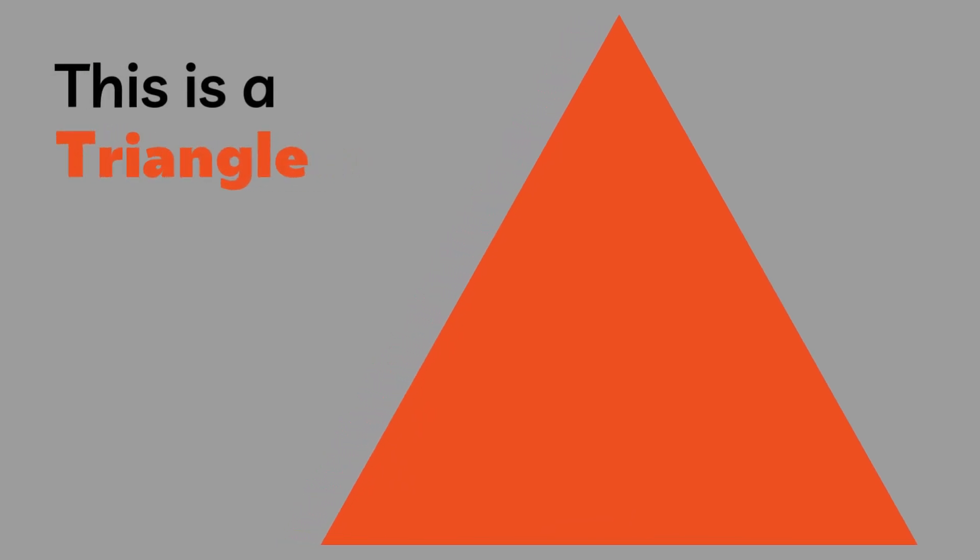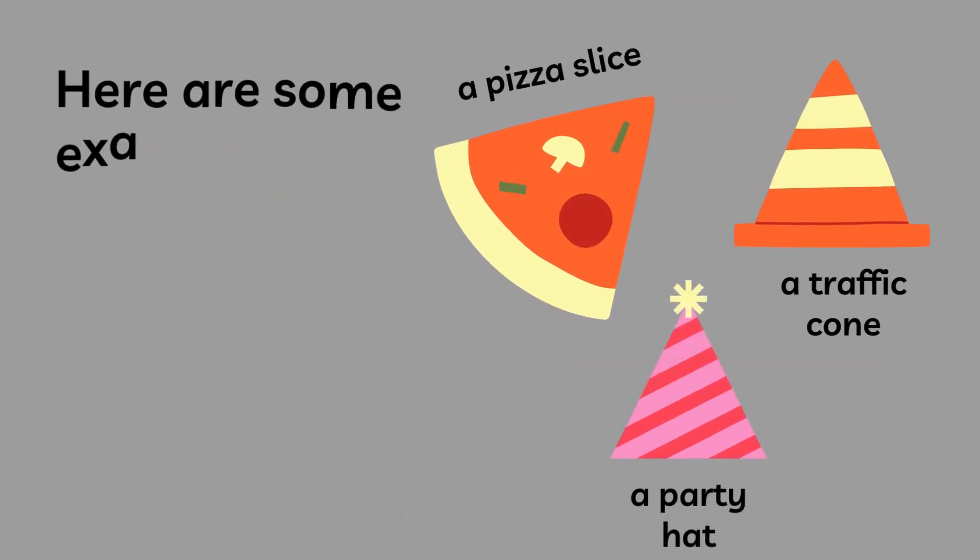This is a triangle. It has three straight sides and three pointy corners. Here are some examples of triangles in our daily life.